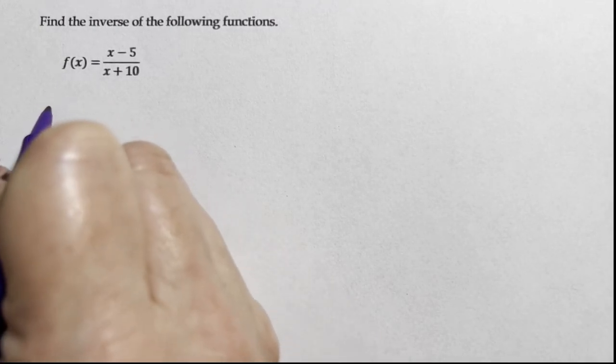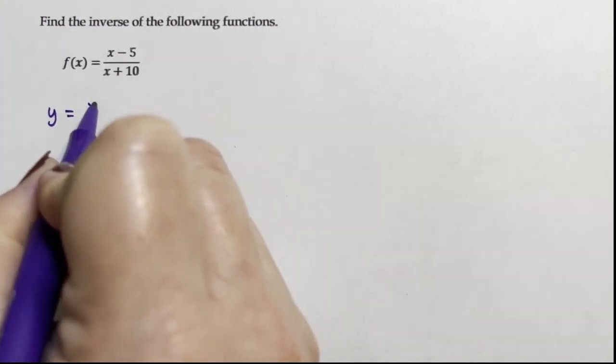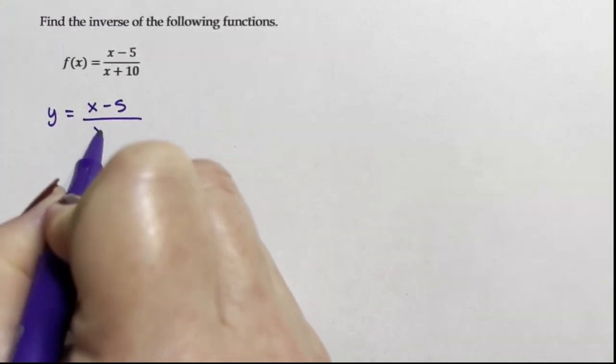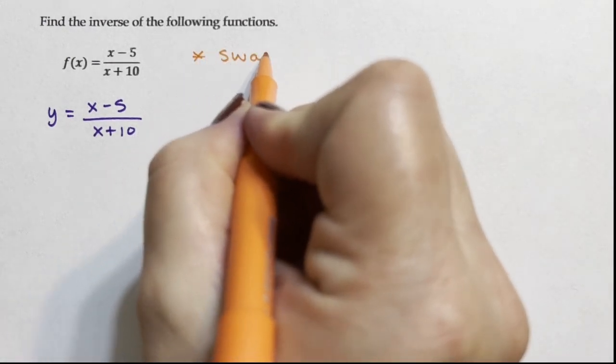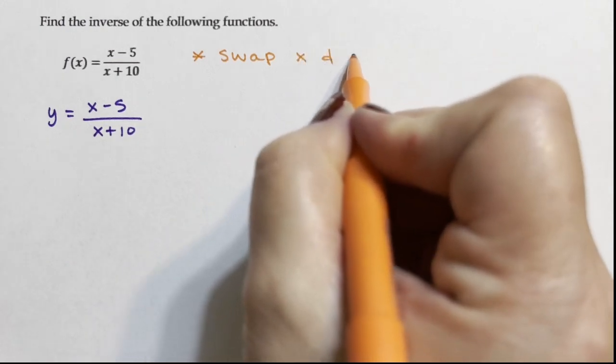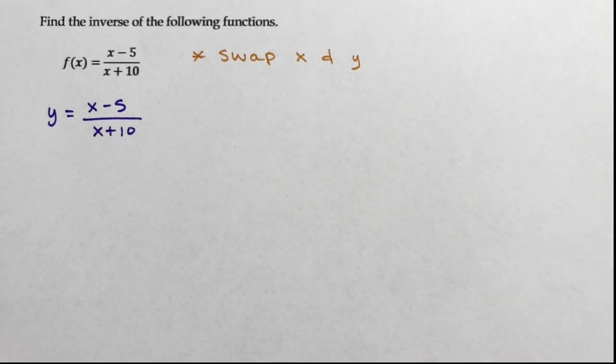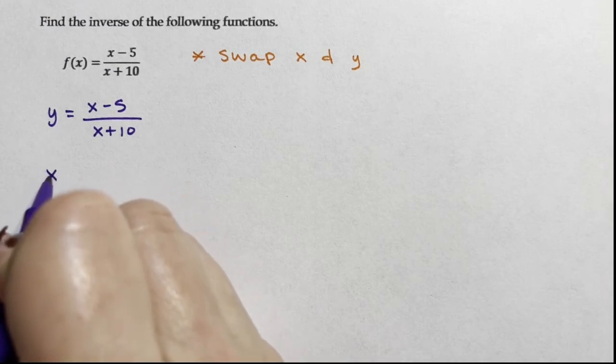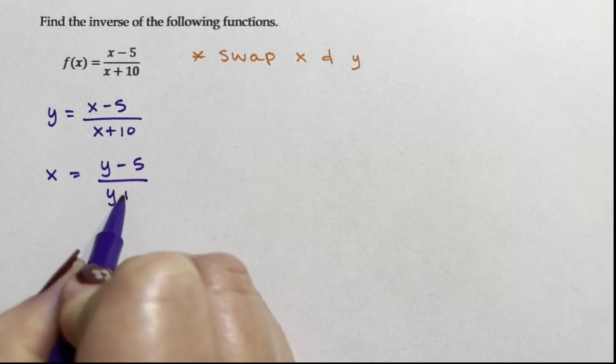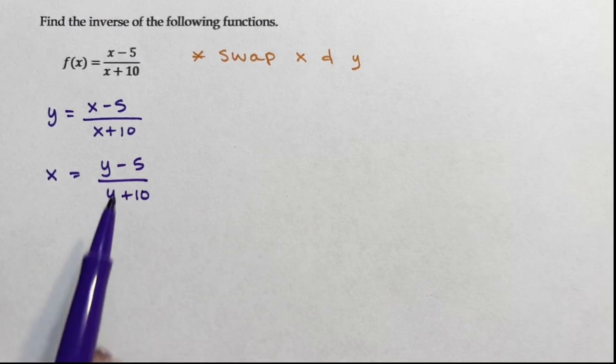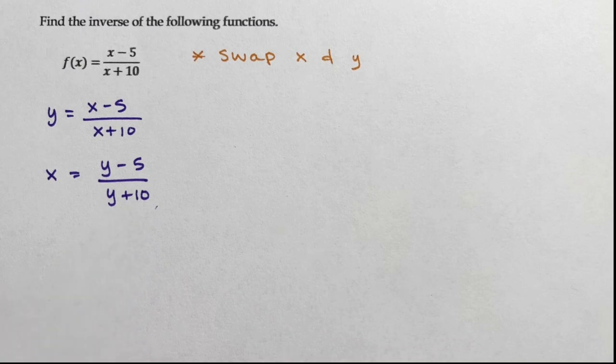So I'm going to start by writing this as y equals x minus 5 over x plus 10. And then my favorite part of this is I am going to swap x and y. Then I'm going to solve for y. So I'm going to write x equals y minus 5 over y plus 10. So this is tricky. I need to get the y out of the denominator.